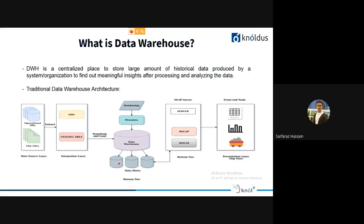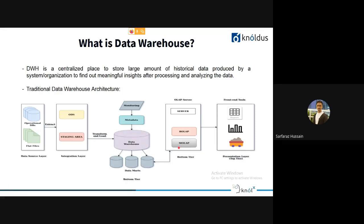Once data is loaded into the data warehouse, we create smaller subdivisions called data marts — one for sales, one for purchases, one for staff. Upon these data marts, we have relational and multi-dimensional servers used for analysis, which ultimately serve the presentation layer: your graphs, visualization tools, or even a simple Excel sheet. We'll look into this in depth in terms of Snowflake.